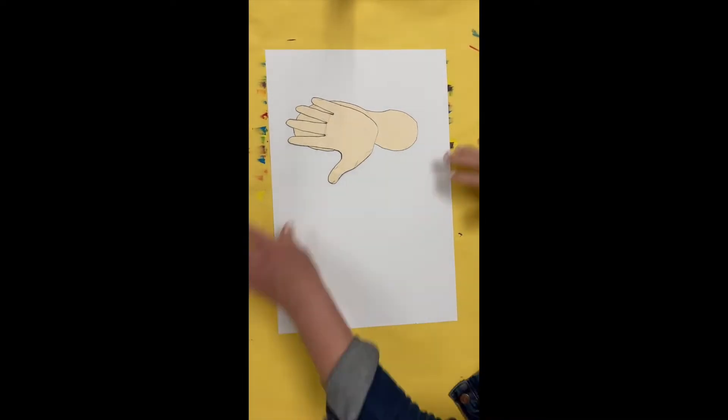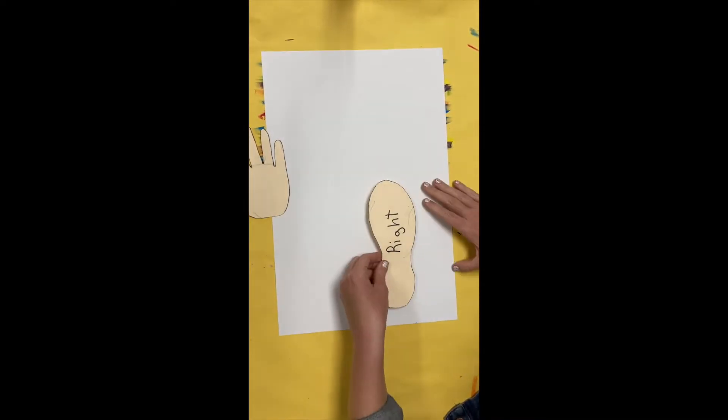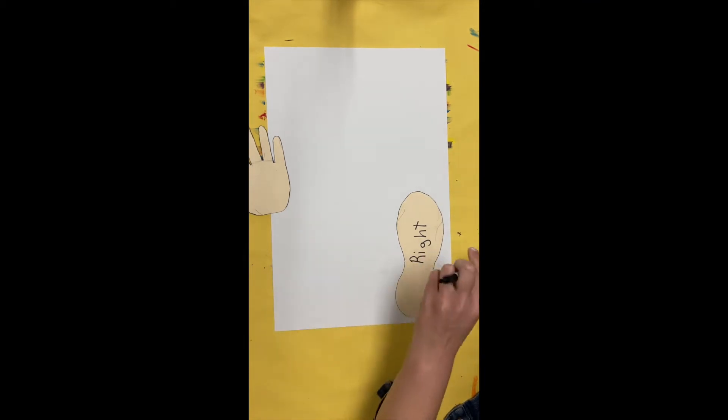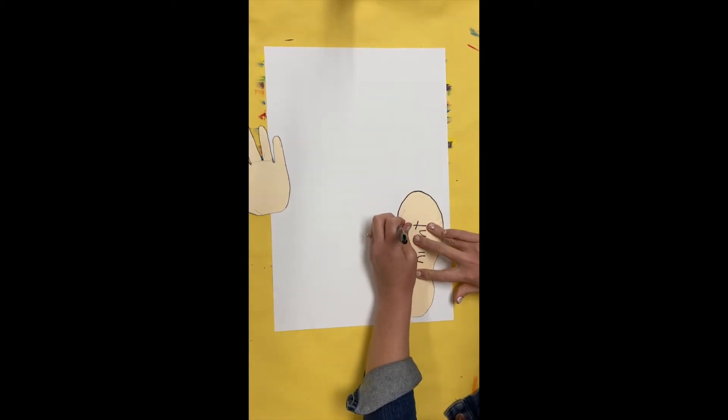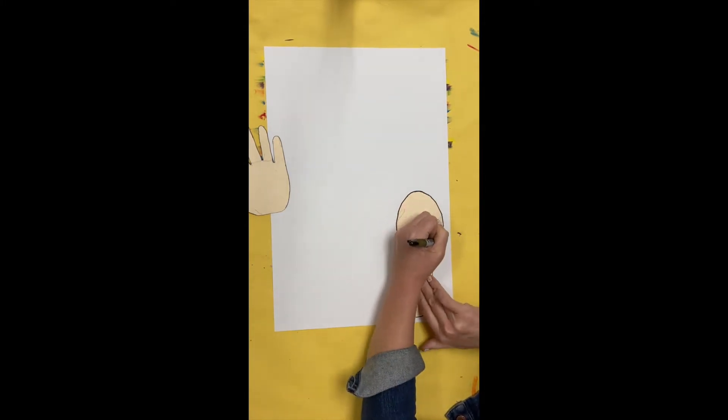For today's art activity, we are going to create a fun falling self-portrait. I'm going to start by tracing the feet at the bottom corners of my paper.